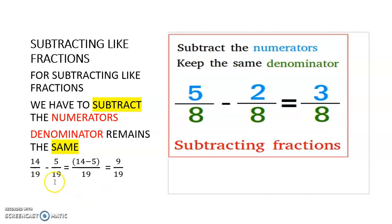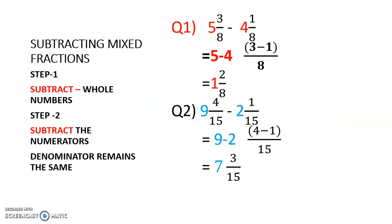One more example: 14 upon 19 minus 5 upon 19. The denominator 19 remains the same, and 14 minus 5 gives us 9, so the answer is 9 upon 19. For subtracting like fractions, we subtract the numerators and the denominator remains the same.